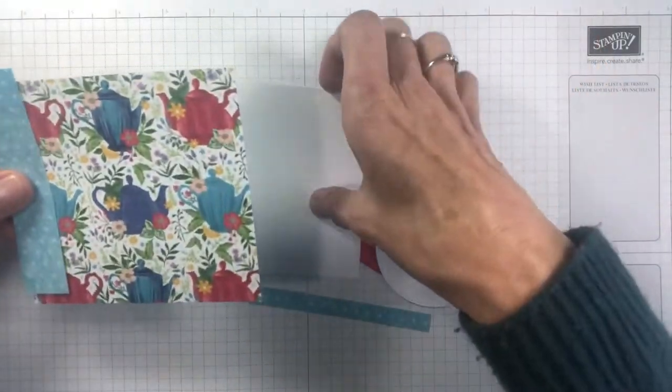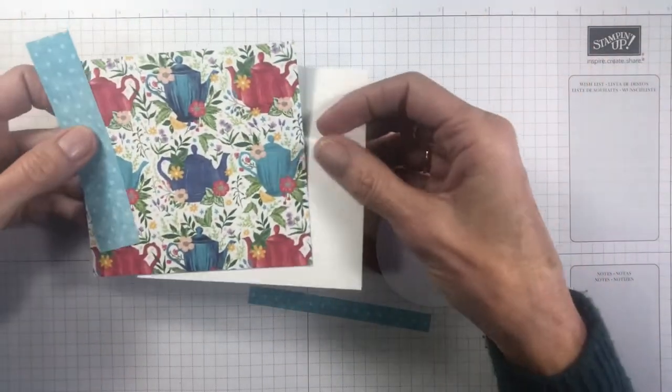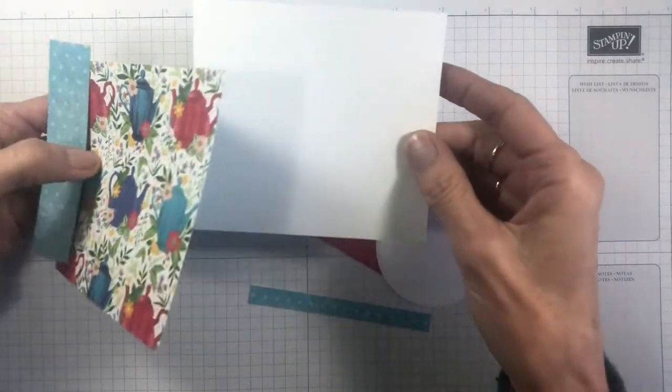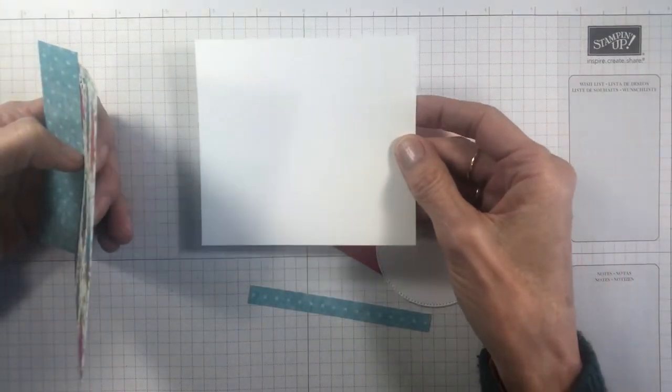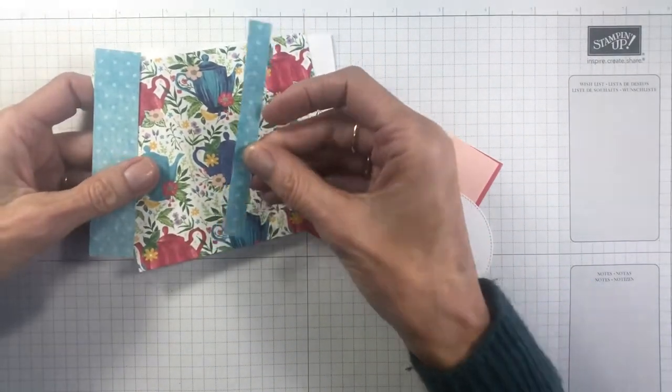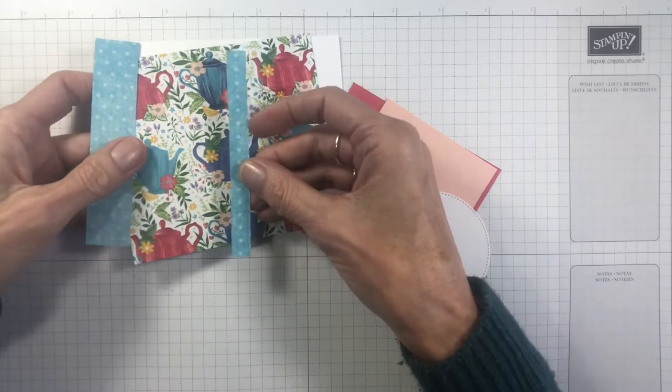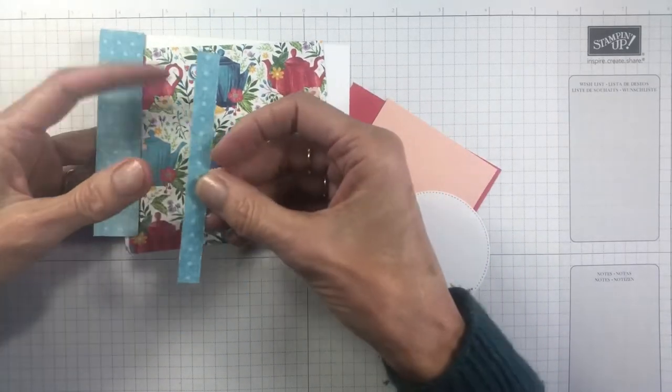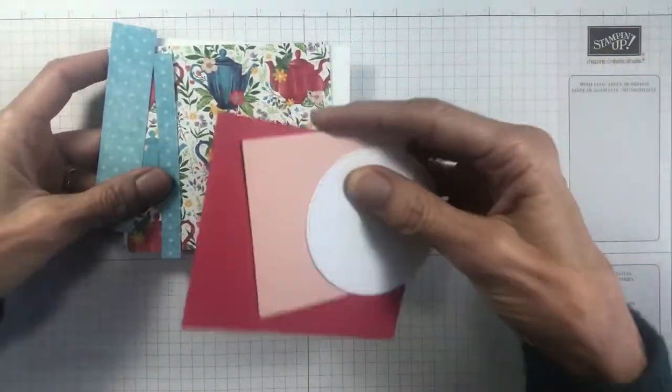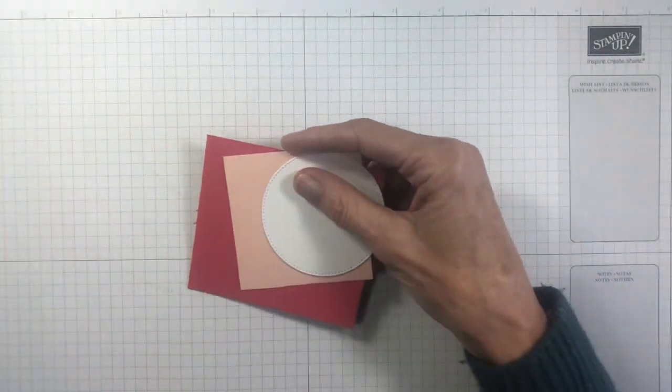You'll need a piece of white card that is the same size as your larger DSP piece. That's going to be for your inside. I've just had an extra off cut of DSP and I'm just going to put that inside to decorate. I'll show you that a little bit more later.